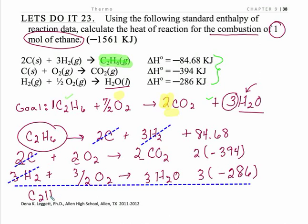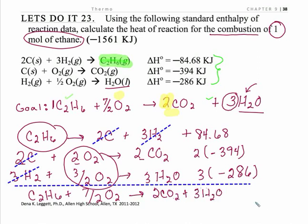Now you just carry everything else down. So I've got C2H6 to carry down. I've got four halves and three halves, so I've got seven halves oxygen. So that takes care of that. I've got two CO2 and three H2O. So indeed I did get to my goal reaction. And my final delta H is simply the sum of all of those, which is minus 1561 kilojoules.